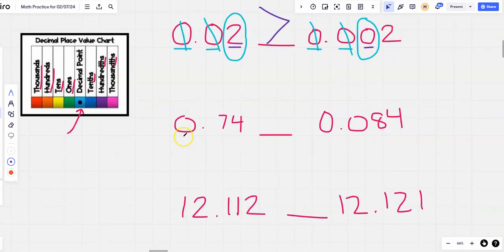Compare the first numbers. They are the same. We can't compare those. Tenths place. They are different. So we're going to put a circle around them because those are the numbers we compare, the ones that are different. We know that seven is greater than zero, so the mouth is open to the seven, and we're done. So seventy-four hundredths is greater than eighty-four thousandths.